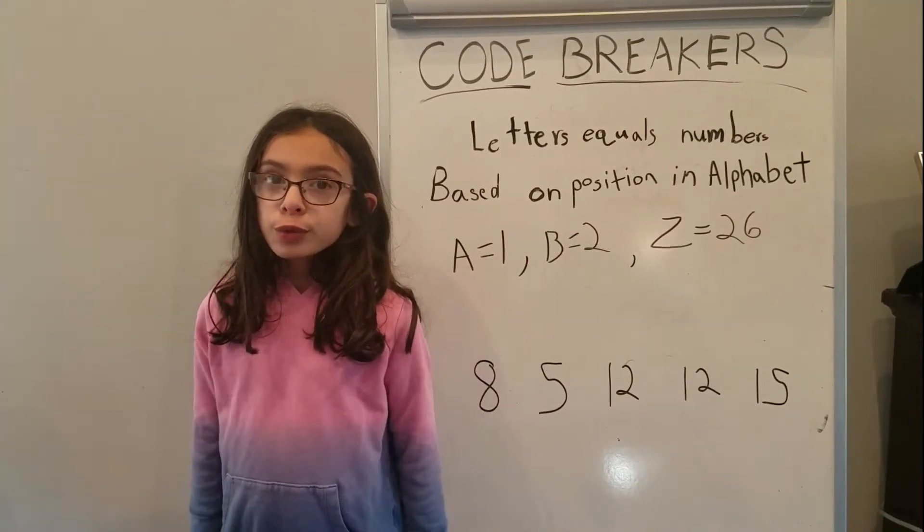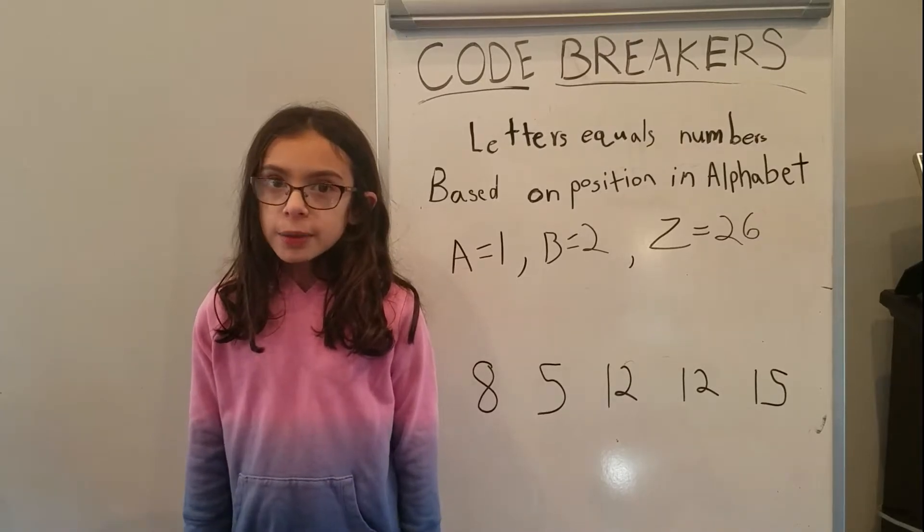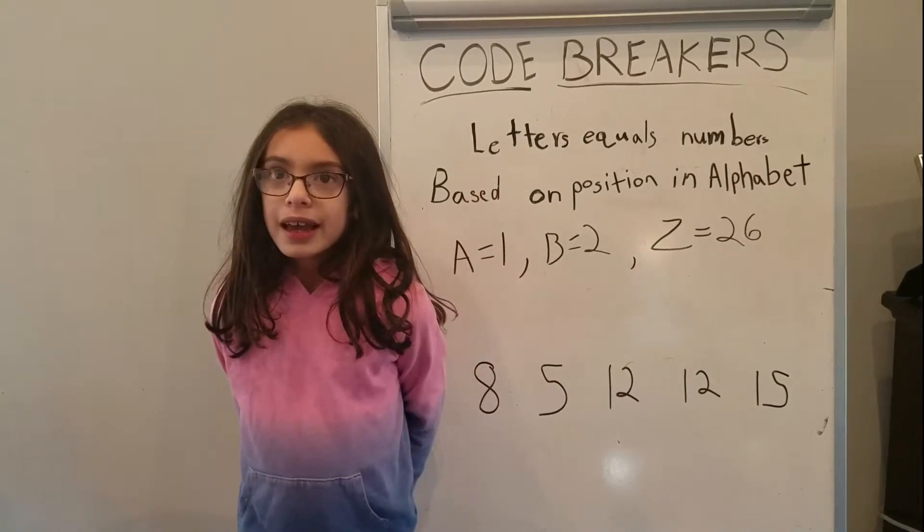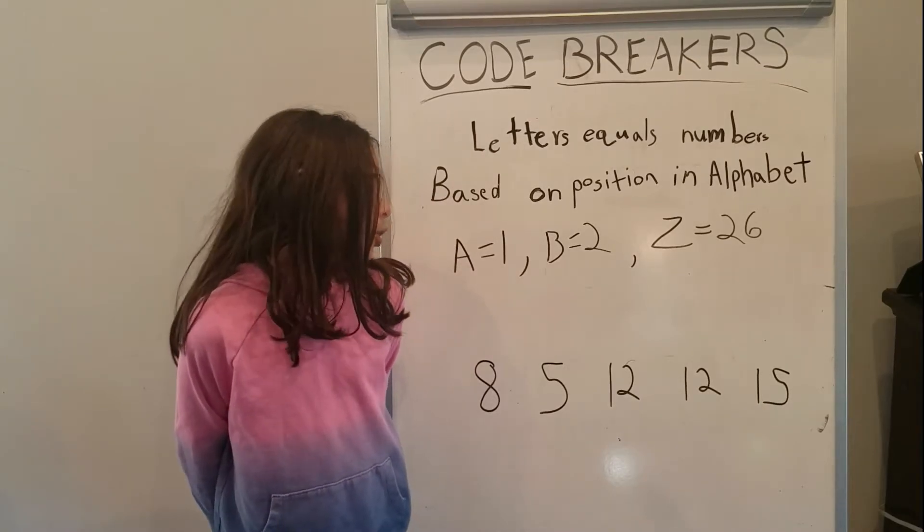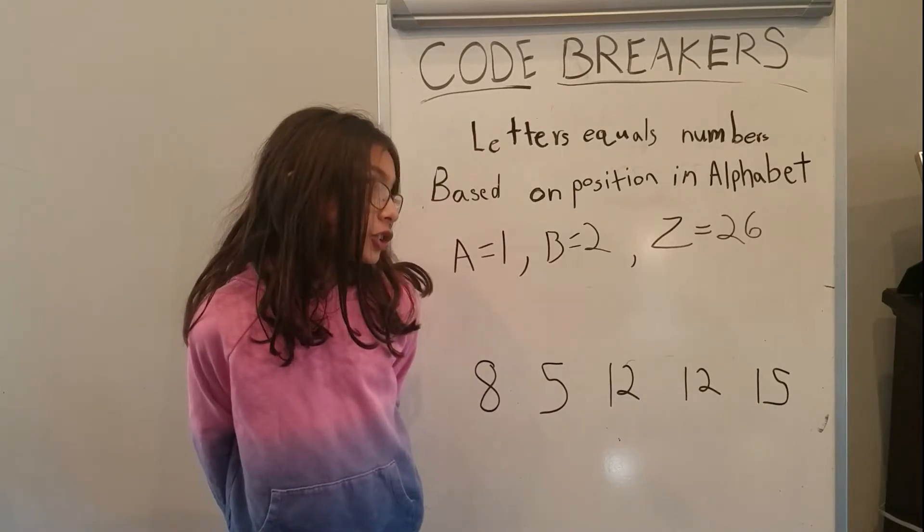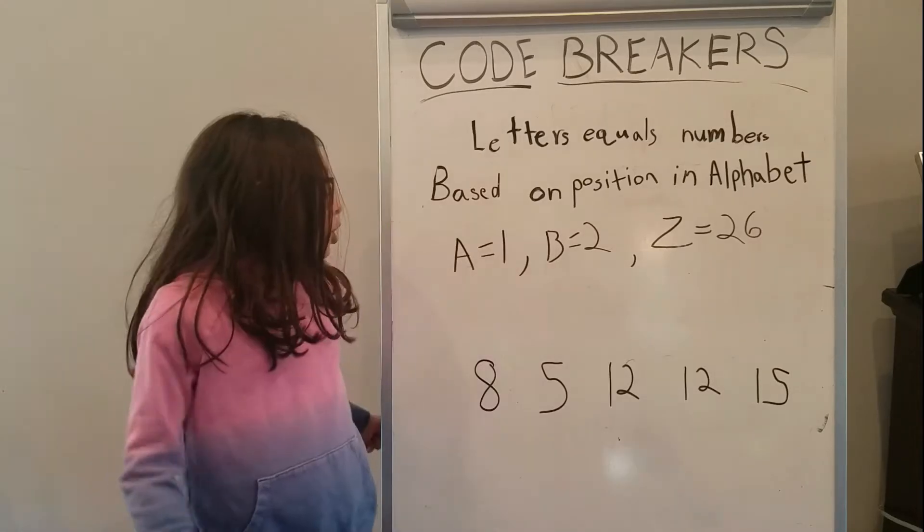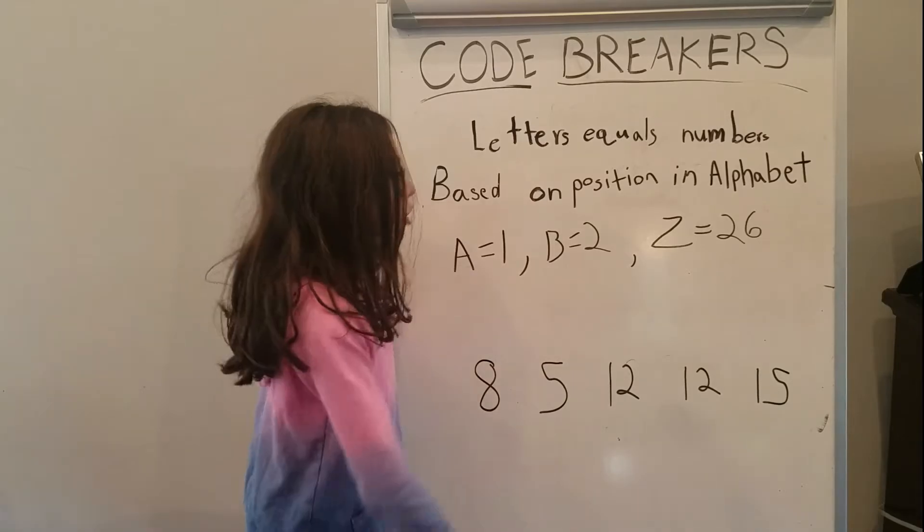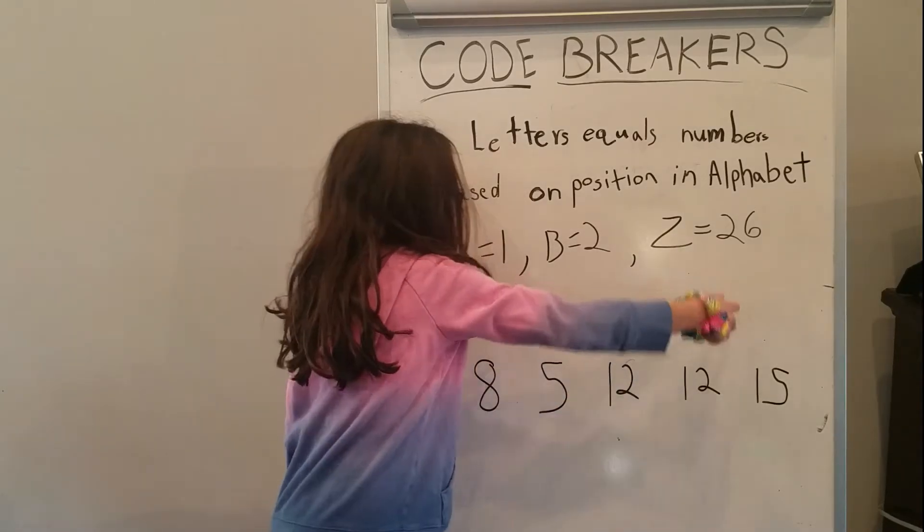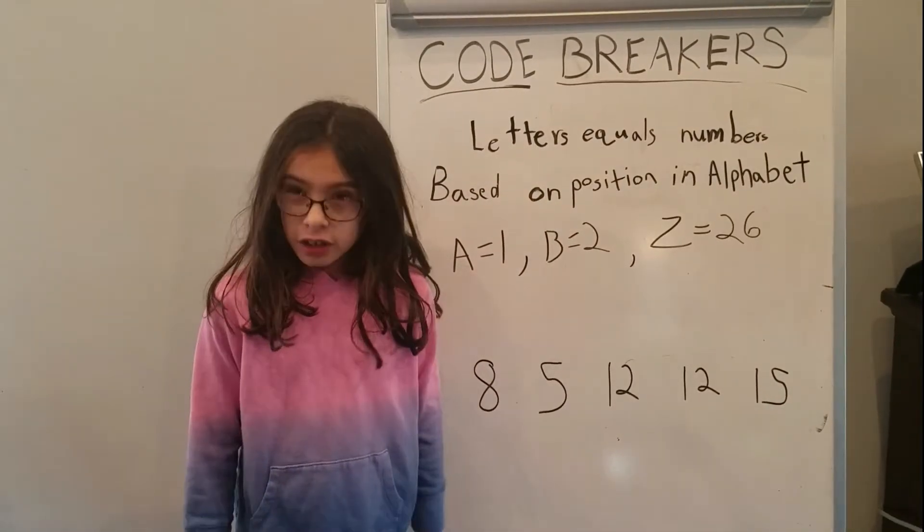In this code breaking lesson, letters can be represented by numbers. The easiest way is the letter equals its number based on its position in the alphabet. So a equals 1 because it's the first letter, b equals 2 because it's the second letter, and z equals 26 because it's the 26th letter.